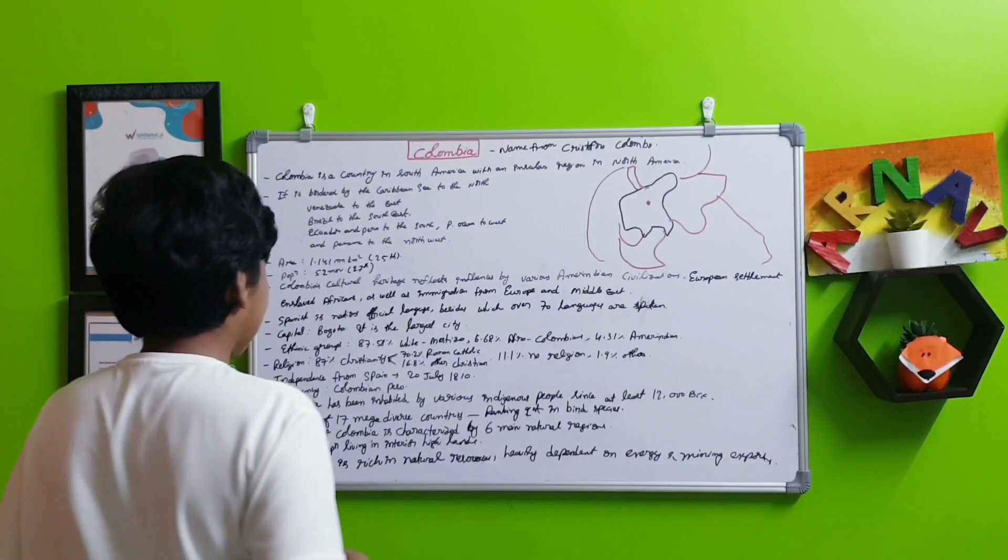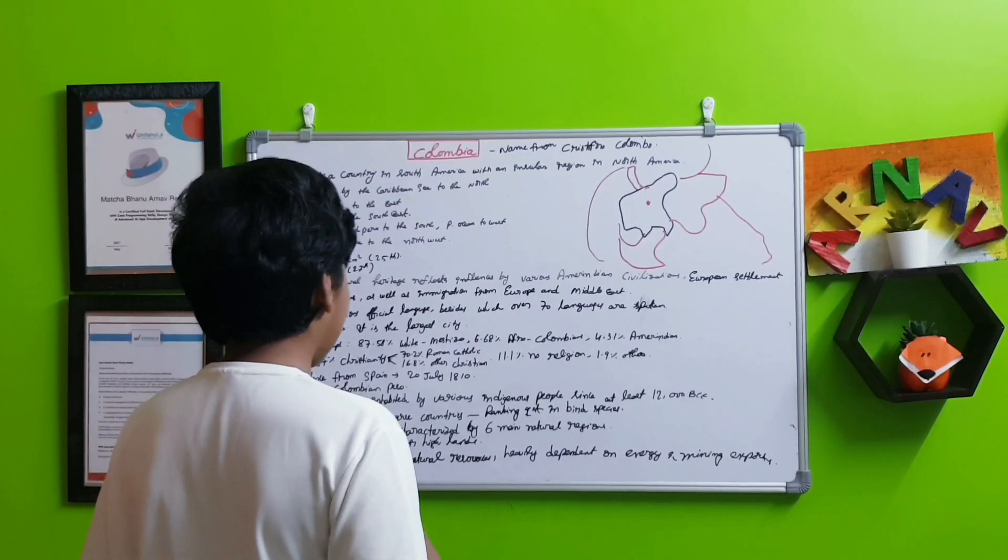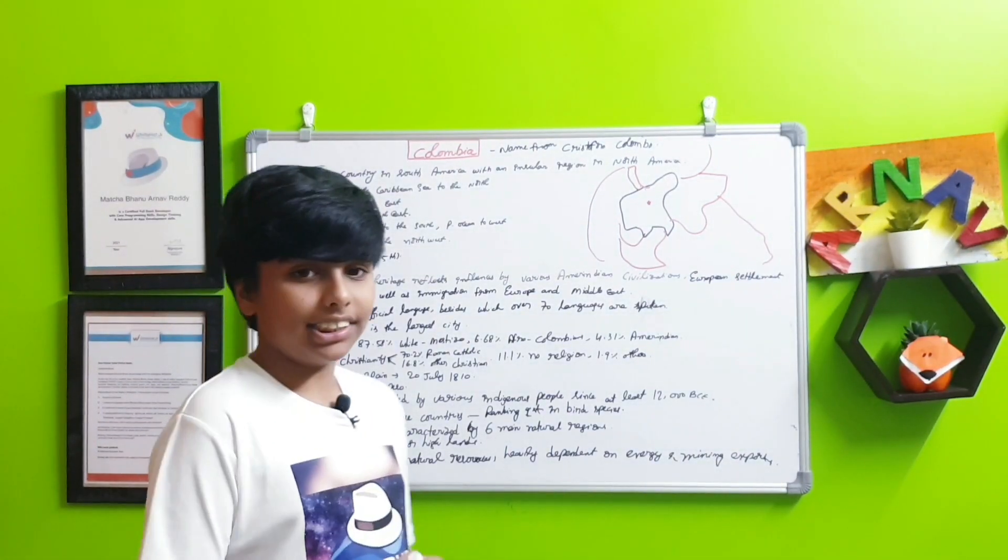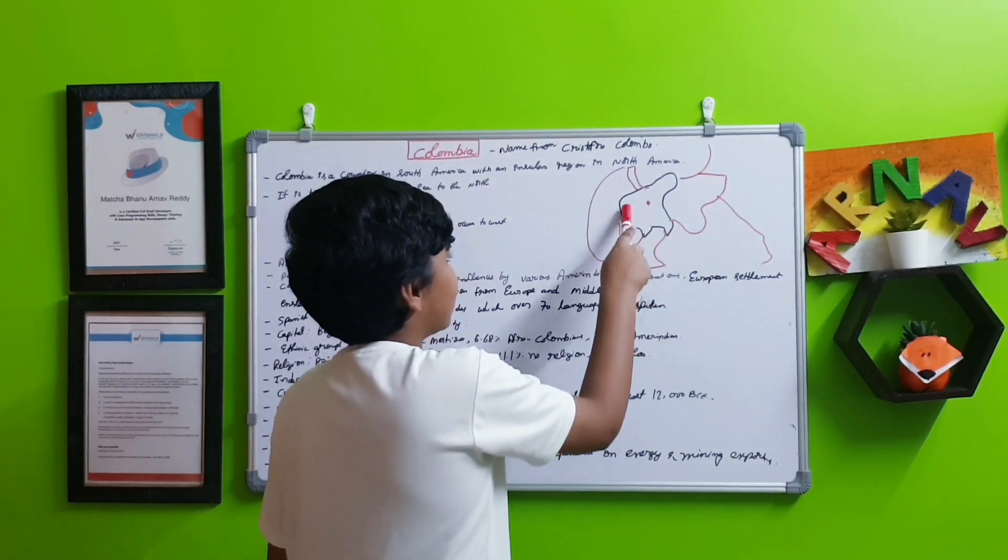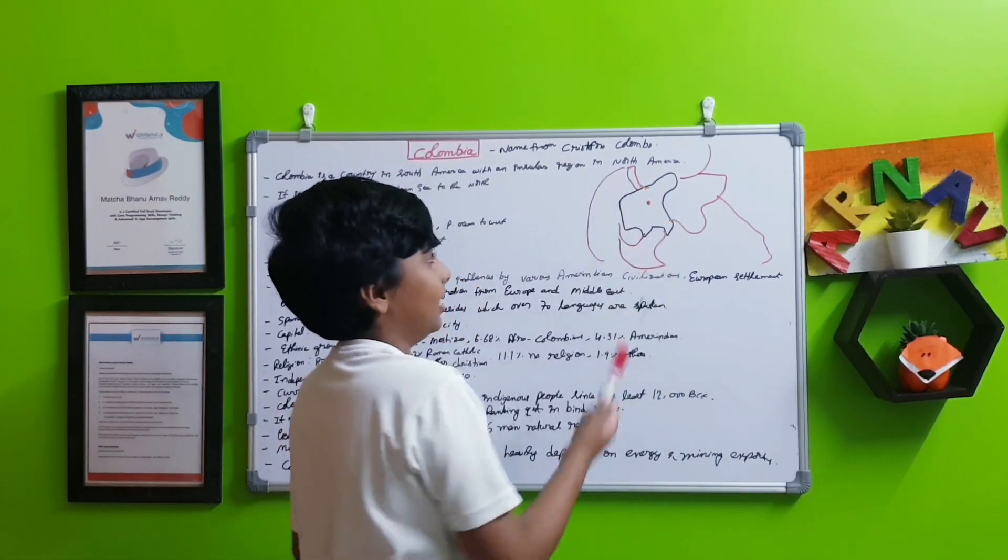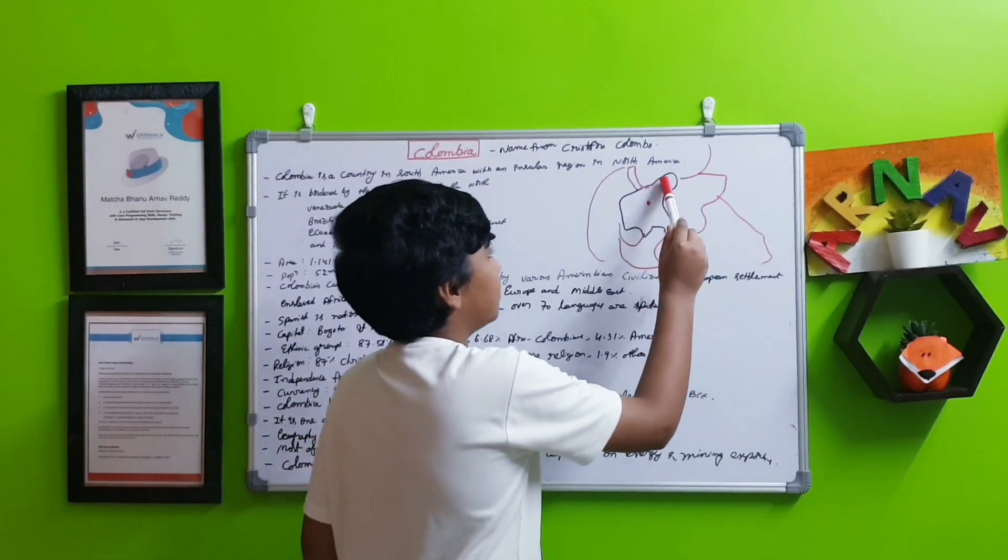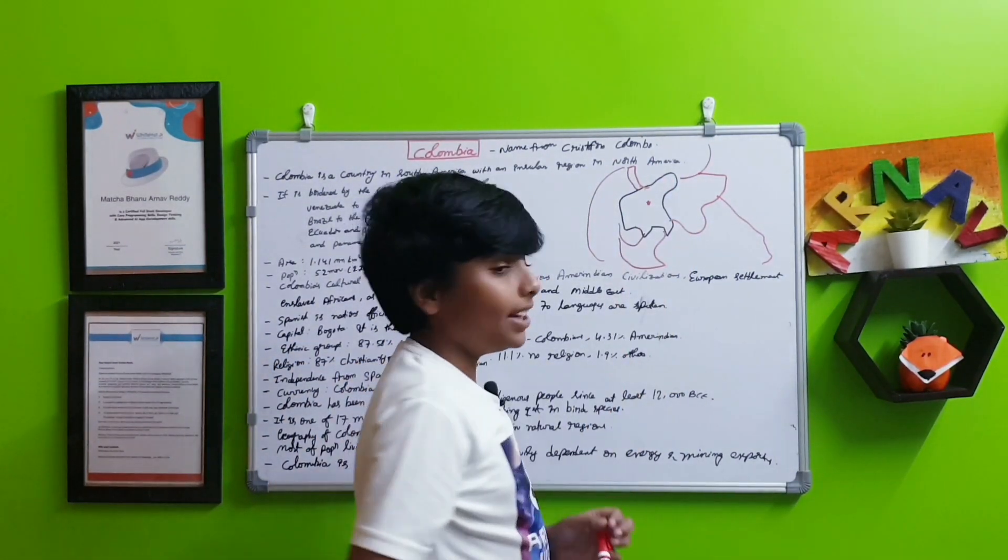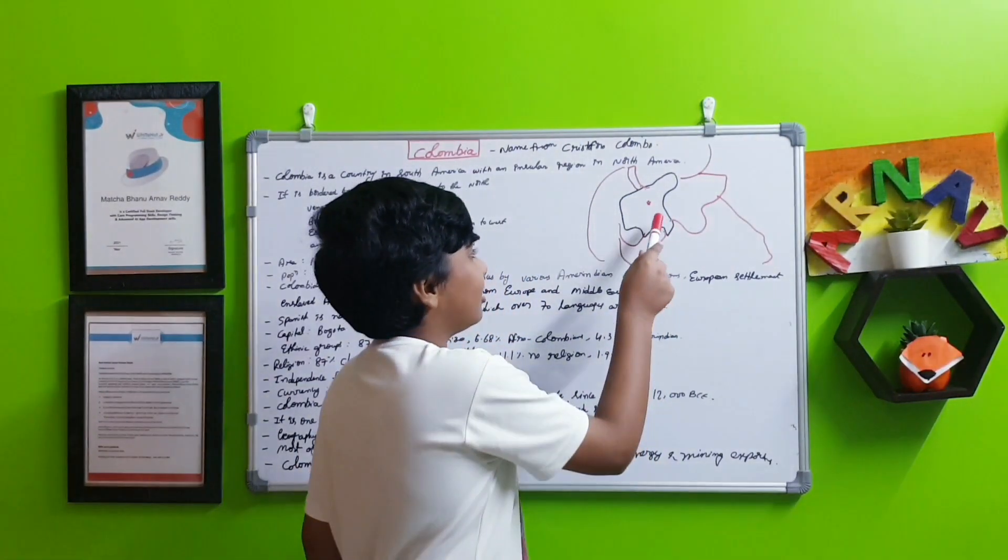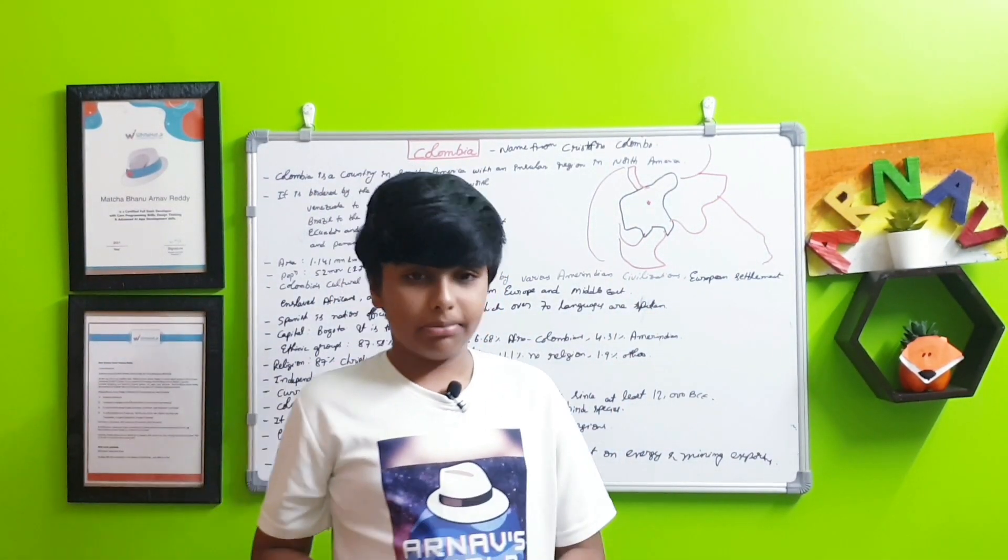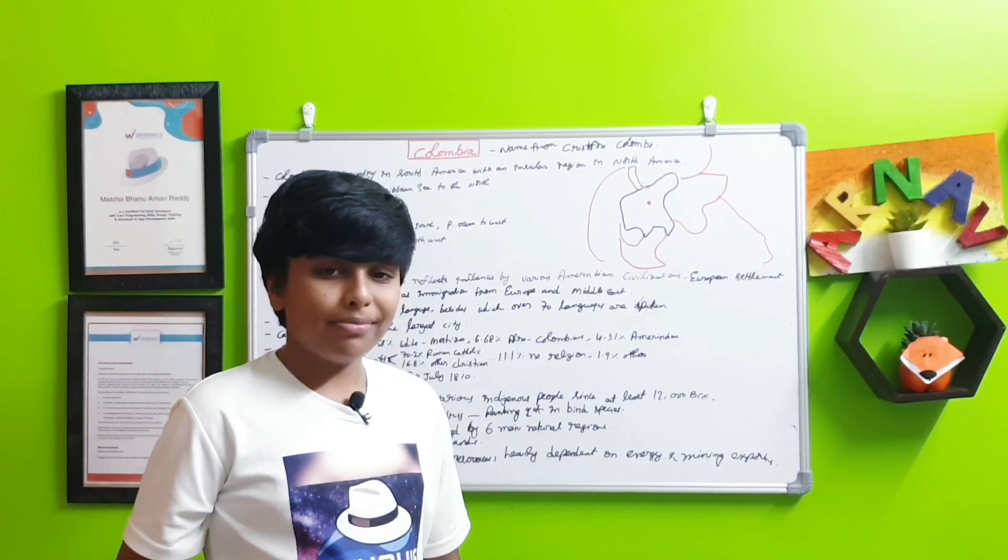The geography of Colombia is characterized by six main natural regions: mountains, plains, insular islands in the Caribbean and Pacific Ocean, a small desert region, and also a rainforest. That rainforest is a continuation of the Amazon rainforest.